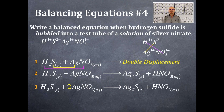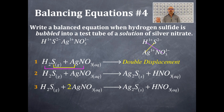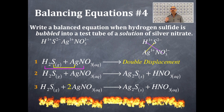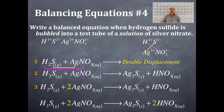Looking at Ag₂S on the product side — how many sulfurs? One. How many sulfurs on the reactant side? One. So the sulfurs are balanced. Now look at the formula H₂S on the reactant side — there are two hydrogens. How many hydrogens on the product side? One. So I put a stoichiometric coefficient of two in front of the nitric acid. Now I have my balanced chemical equation.